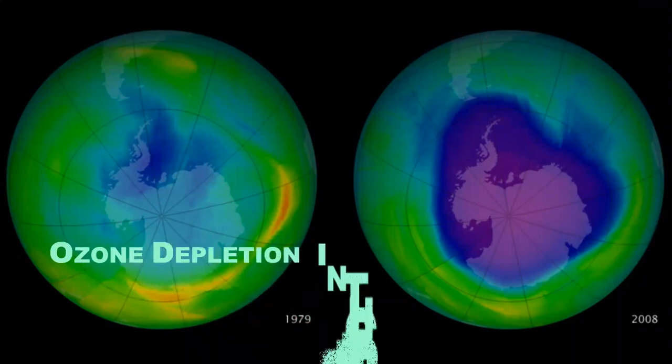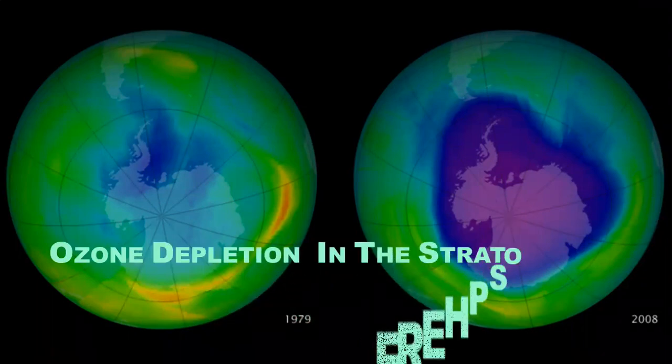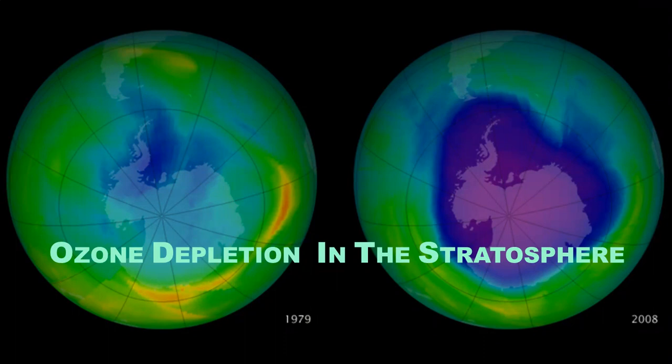Next is ozone depletion in the stratosphere. You can see in the image the ozone layer in 1979 on the left and in 2008 on the right. The blue color shows the hole in the ozone layer, indicating ozone depletion.